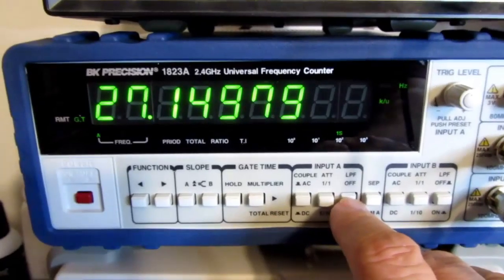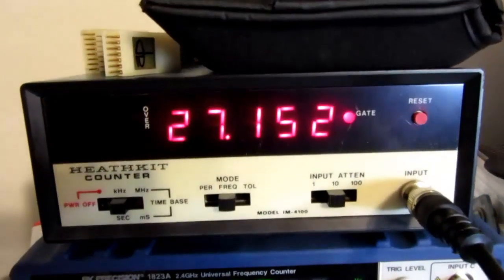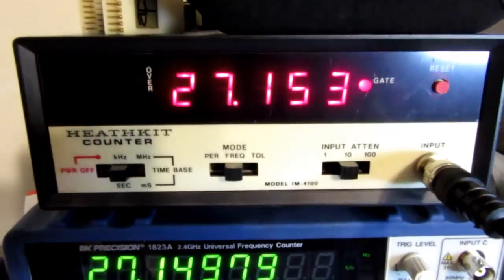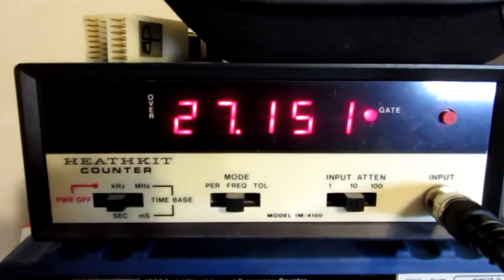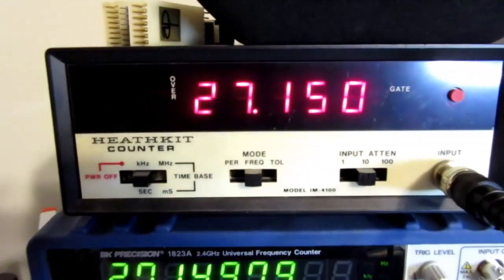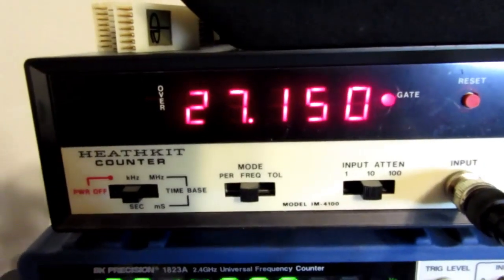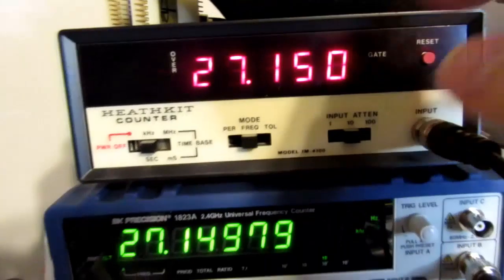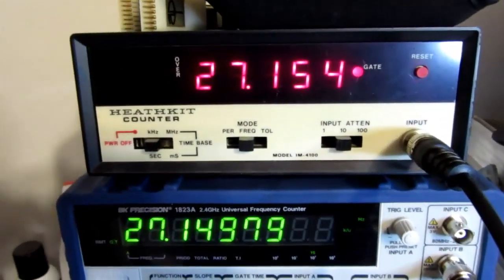And the Heathkit, even though it hasn't been calibrated in a long time, is settled in pretty nicely. When it first came on it was reading a substantially higher value, still 27 point something but it was pretty far out, and now it's settled in there pretty nicely at 27.15 and a little noise on the last digit, but not bad at all for something that hasn't been calibrated in a long time.